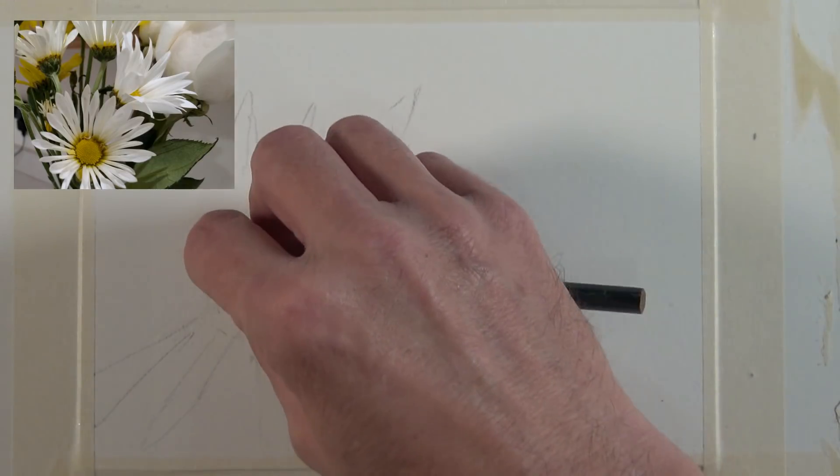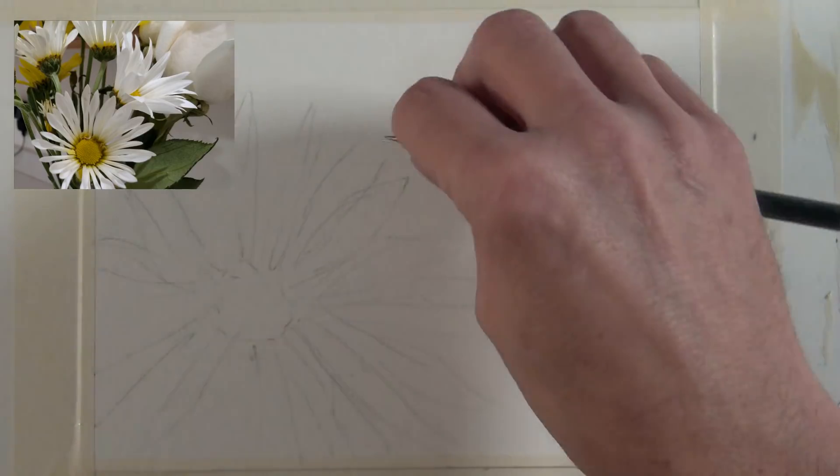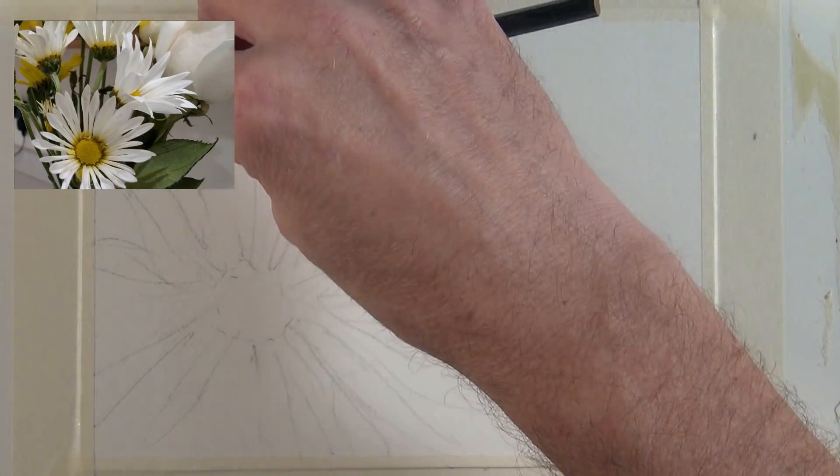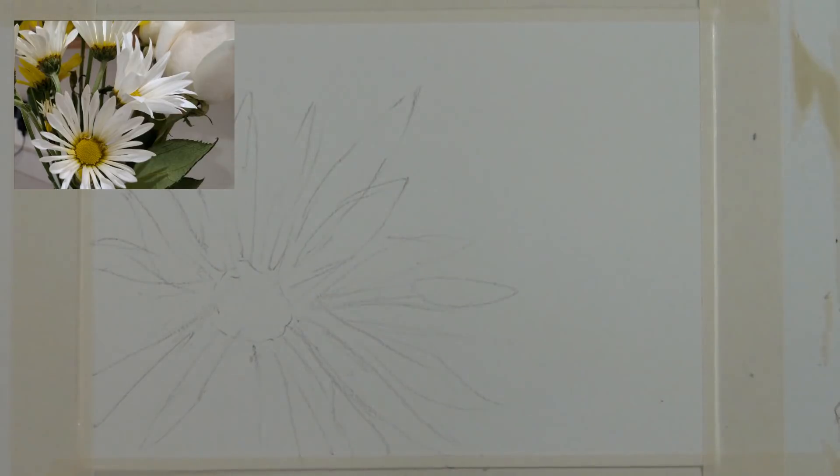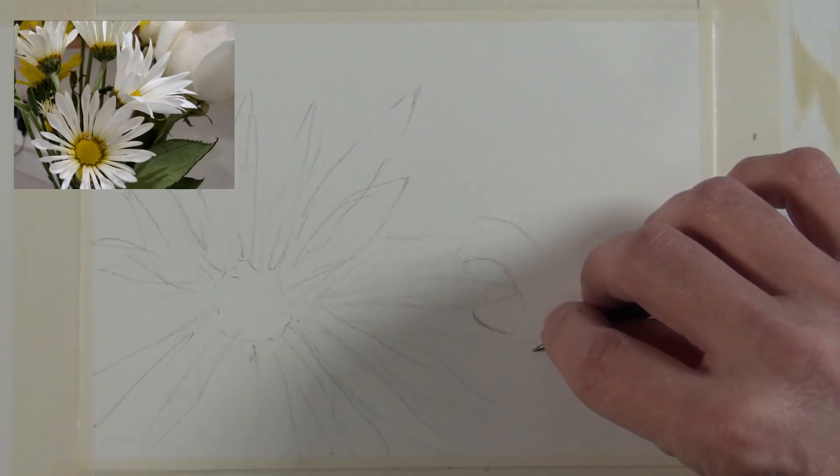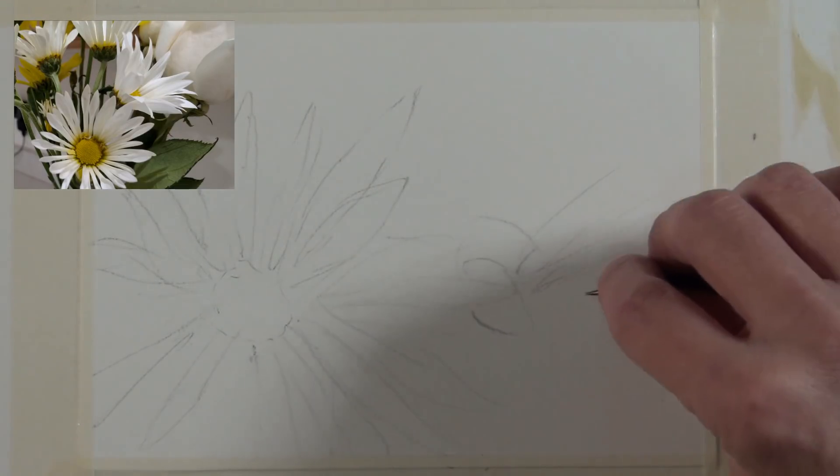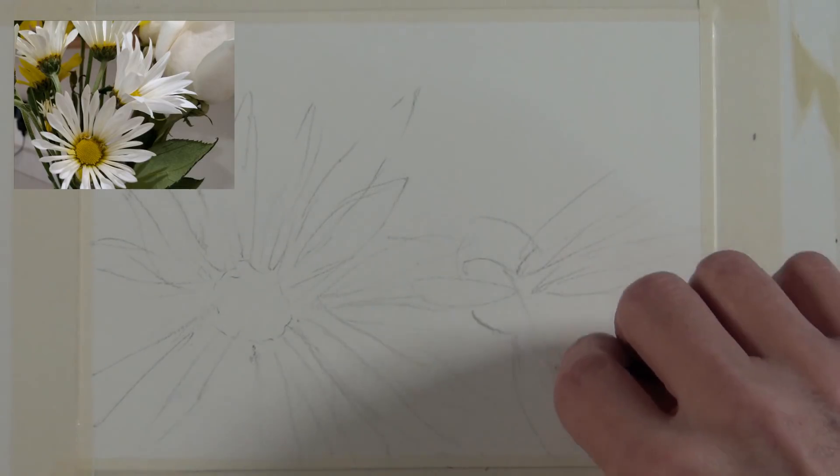...and it just creates a nice design and gives some opportunities to do some nice shape making with the way that these petals or stems or leaves, whatever the case is, how they interact with the edge of the paper. Here I'm putting in a second flower shape, and I begin with the center of the flower.